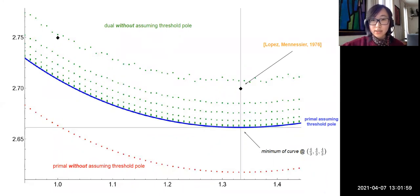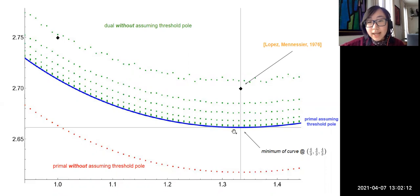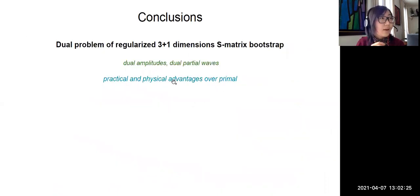As a further test, we maximize the amplitude along a line inside the Mandelstam triangle for s = t from 0 to 4. The blue line comes from the primal with assumed threshold pole; red (primal) and green (dual) are without this assumption. Both converge to the blue line from both sides. We also plot as black diamonds the old results from López and Manasia from the 1970s. A zoomed view near the crossing symmetric point shows the primal still some distance from the blue curve, while the green dual dots converge nicely. The minimum of the curve is located at the crossing symmetric point, likely from symmetry arguments.